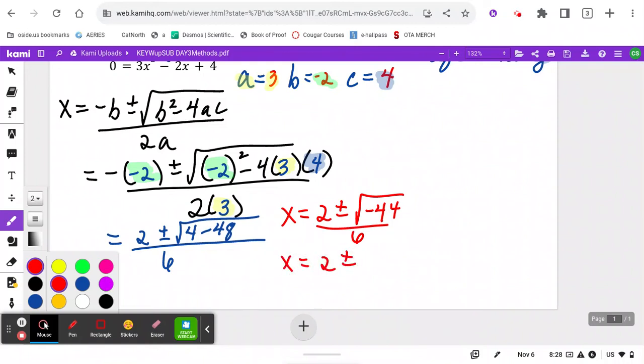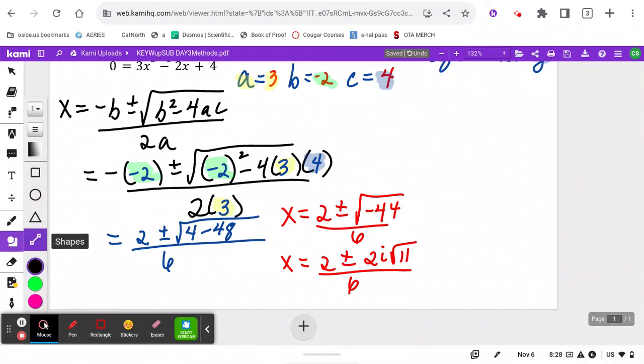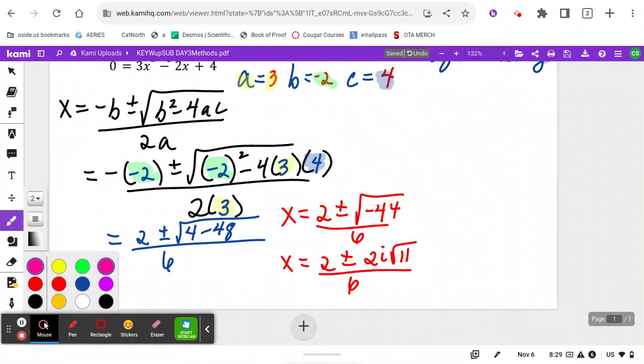X equals 2 plus or minus square root of negative 44 over 6. Now we haven't learned this yet, but we're going to learn how to simplify a negative under the radical. You know how 44 would be 4 times 11, so this would be 2 root 11, but it's got a negative, so we're going to learn about something called i all over 6. Notice that there's a 2, there's a 2, there's a 6, and this can be fully simplified by saying 2 goes into 2 once, 1, 3 times. My final answer is 1 plus or minus i root 11 over 3.